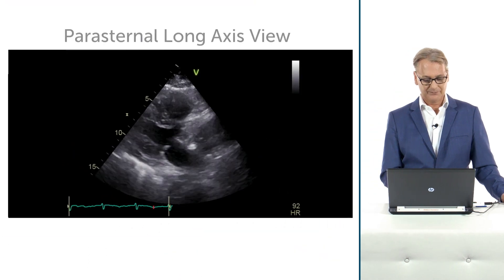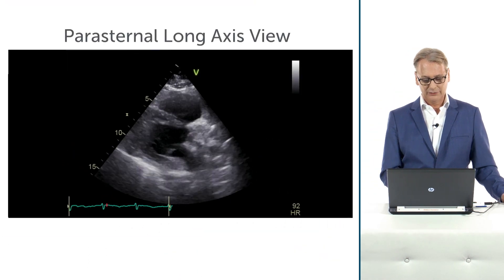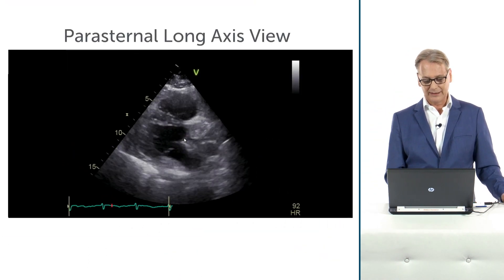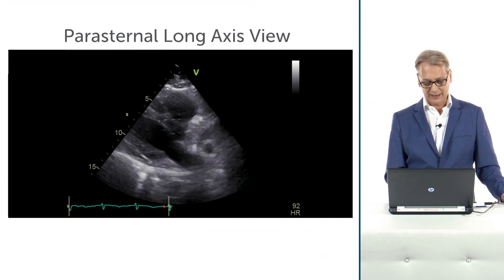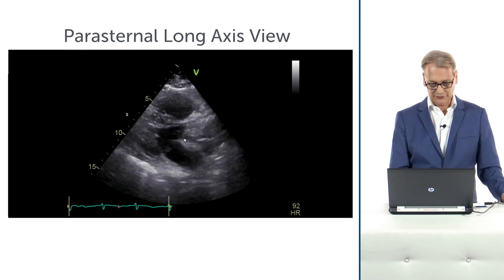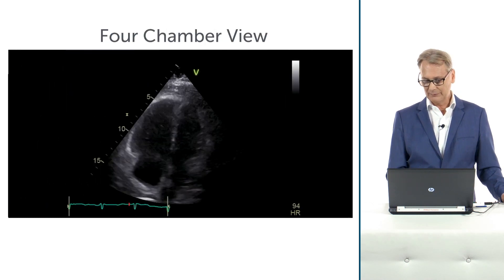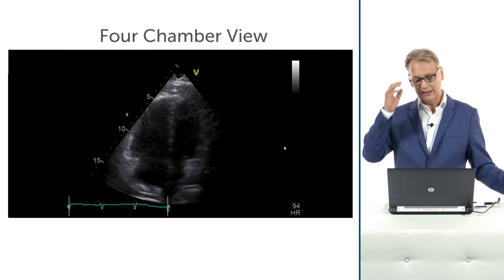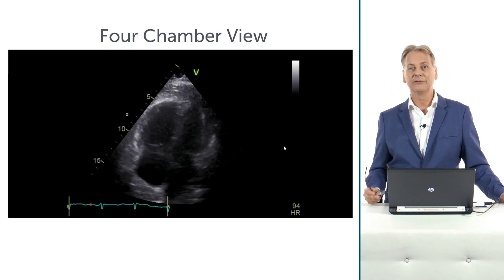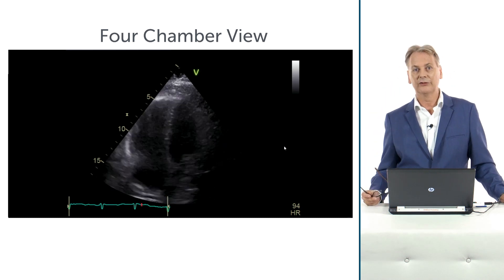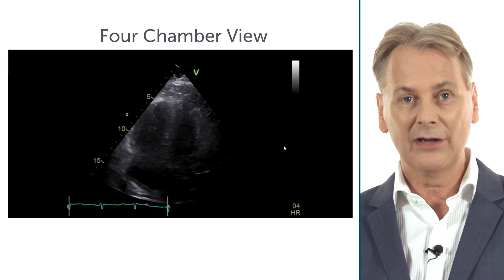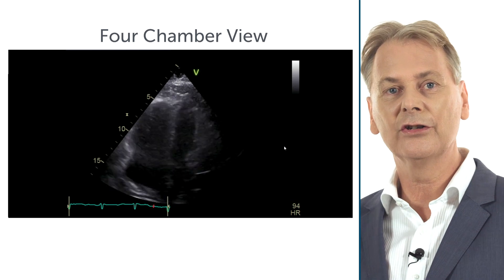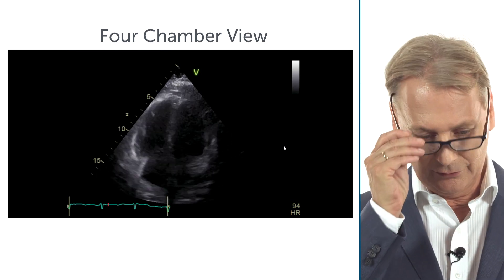Here is the echocardiogram. You might not appreciate the problem in the parasternal long axis view, but in the four-chamber view it's clearly a dilated right ventricle. It's a rather large right ventricle, much larger than the left ventricle.